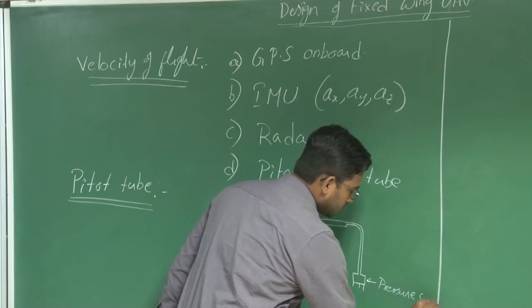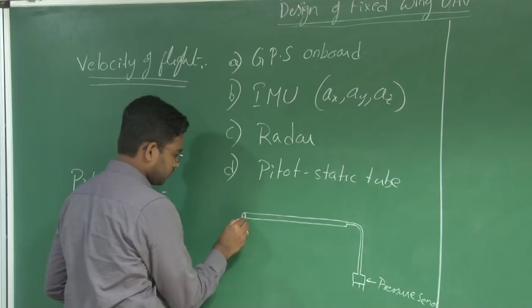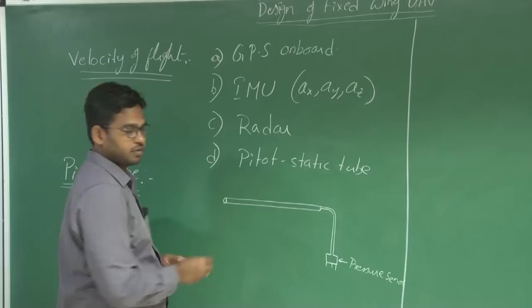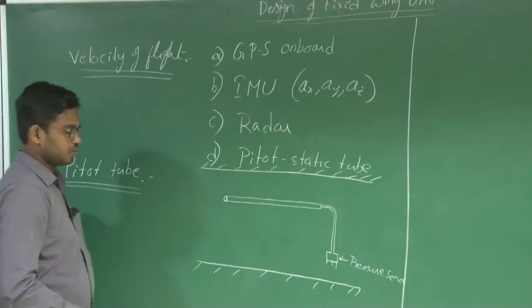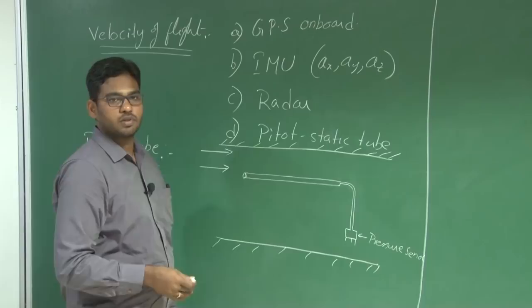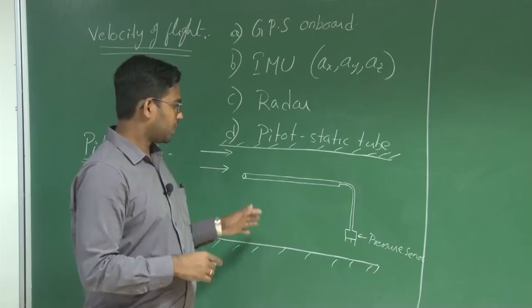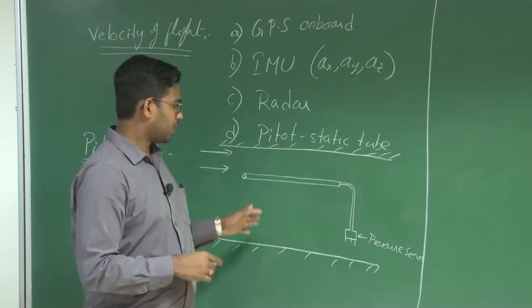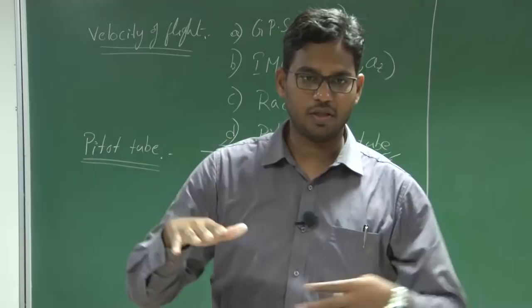Now let us take this setup and place it in a wind tunnel. These two lines represent the boundaries of the wind tunnel test section. A wind tunnel is a device in which we can produce the required velocities — we can produce variable velocities of flight. The effect is similar: either you are moving in static air, or you are holding the body and blowing the air. In both cases, the effect is the same. Let us run this wind tunnel to produce a free stream velocity V∞.